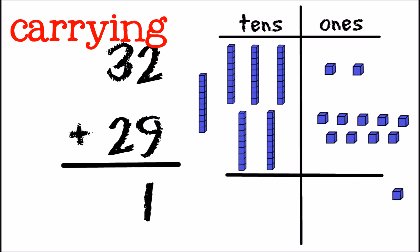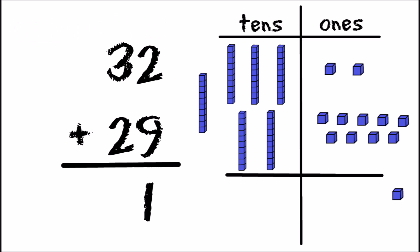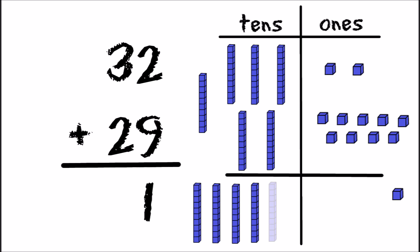And now we're going to count how many stacks of ten we have: one, two, three, four, five, and then the one that came over from the ones column — six. We have six tens, so we write six in our tens column. We have six in the tens column and one in the ones column: 61. 32 plus 29 equals 61.